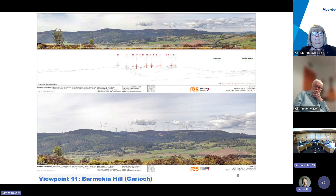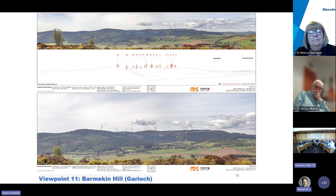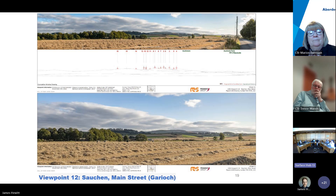Slide 18 shows viewpoint 11, also from within the Geary area, 4.2 kilometers northeast of the nearest turbine. It is a key view for local landscape impacts, showing the extent of the development across the center of the Hill of Fair ridge.